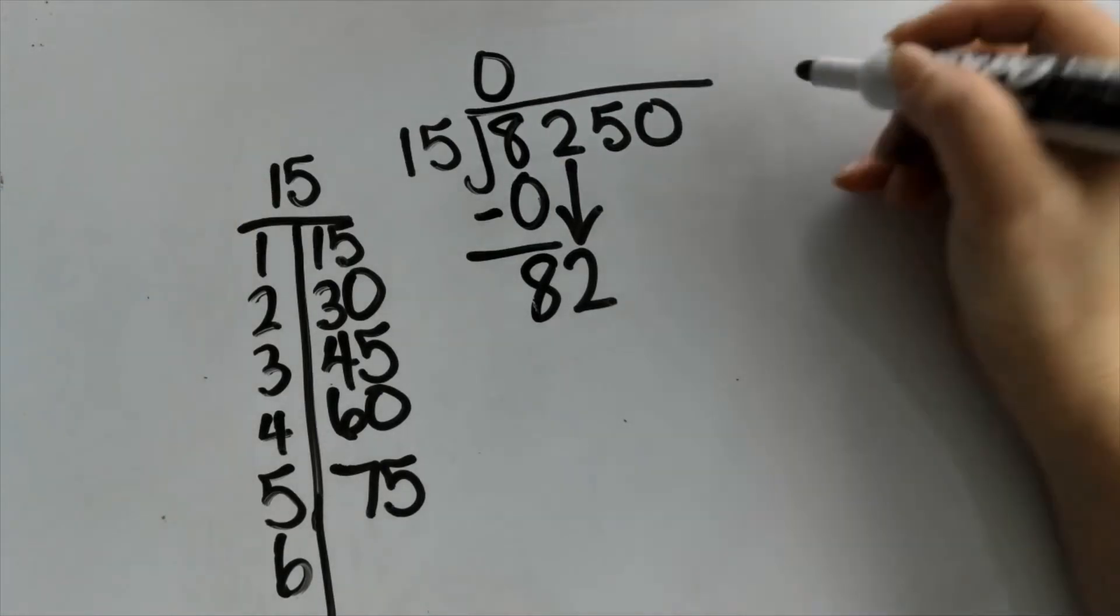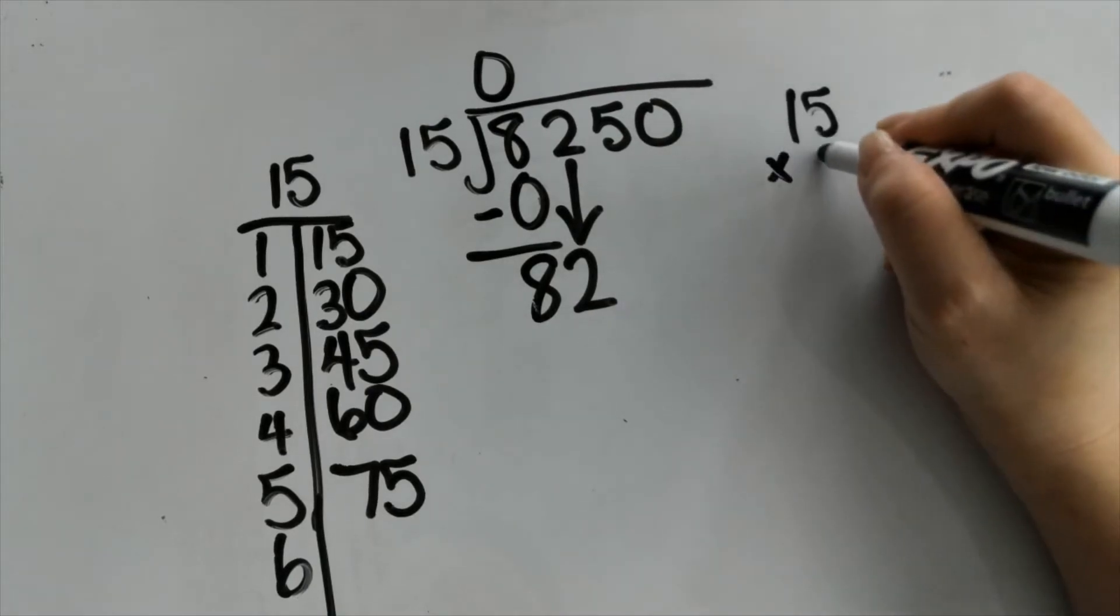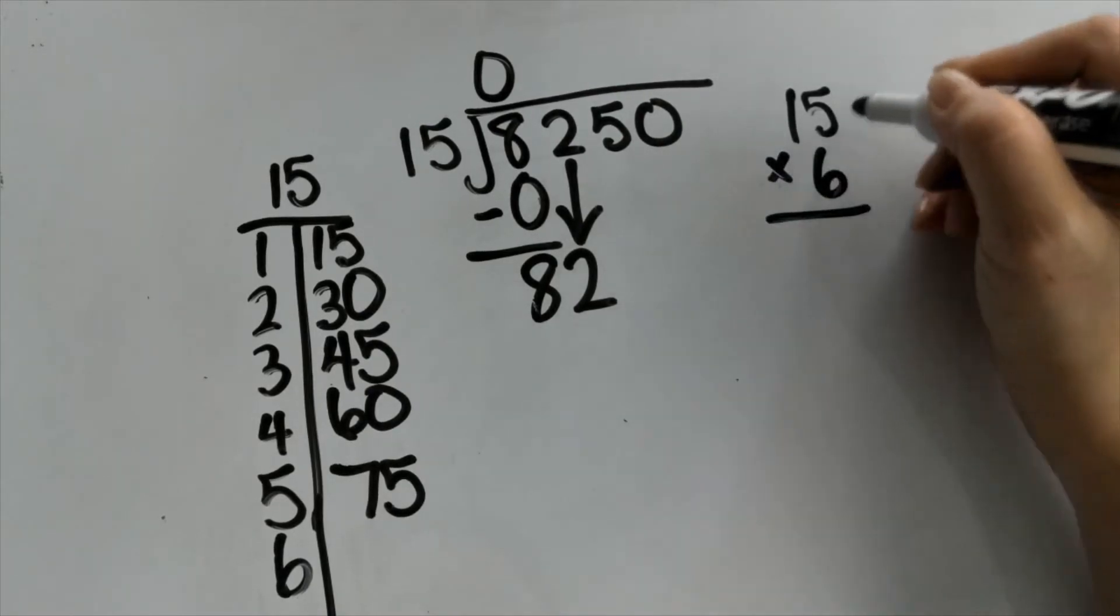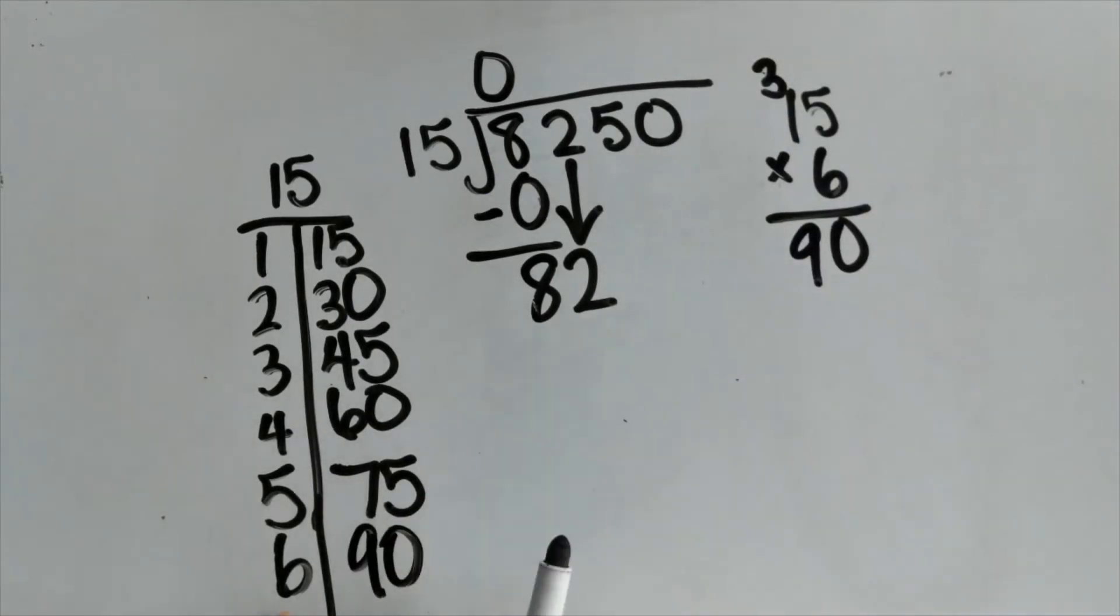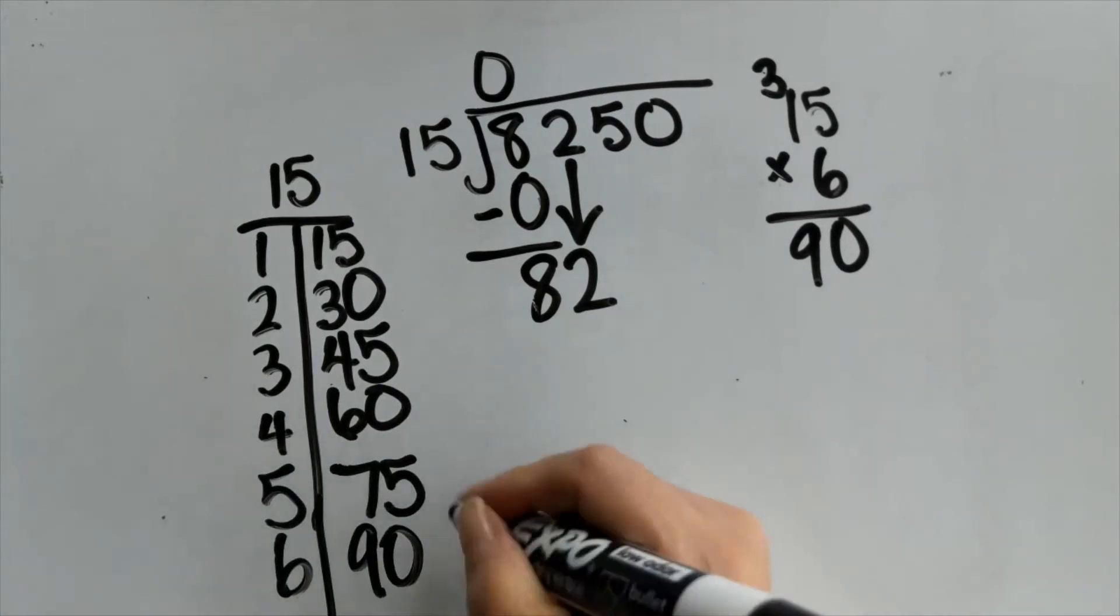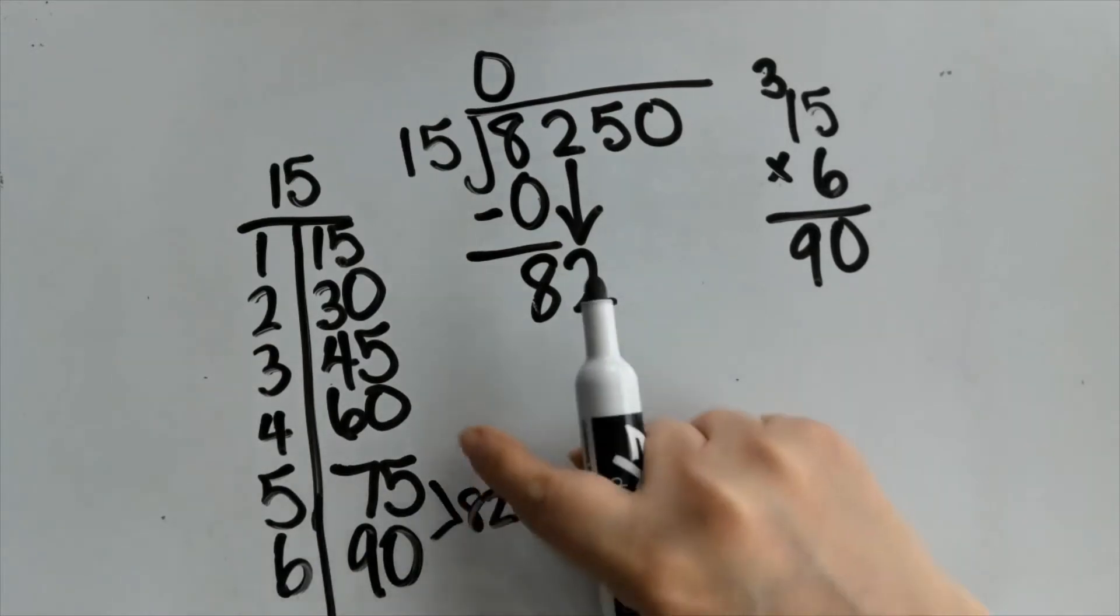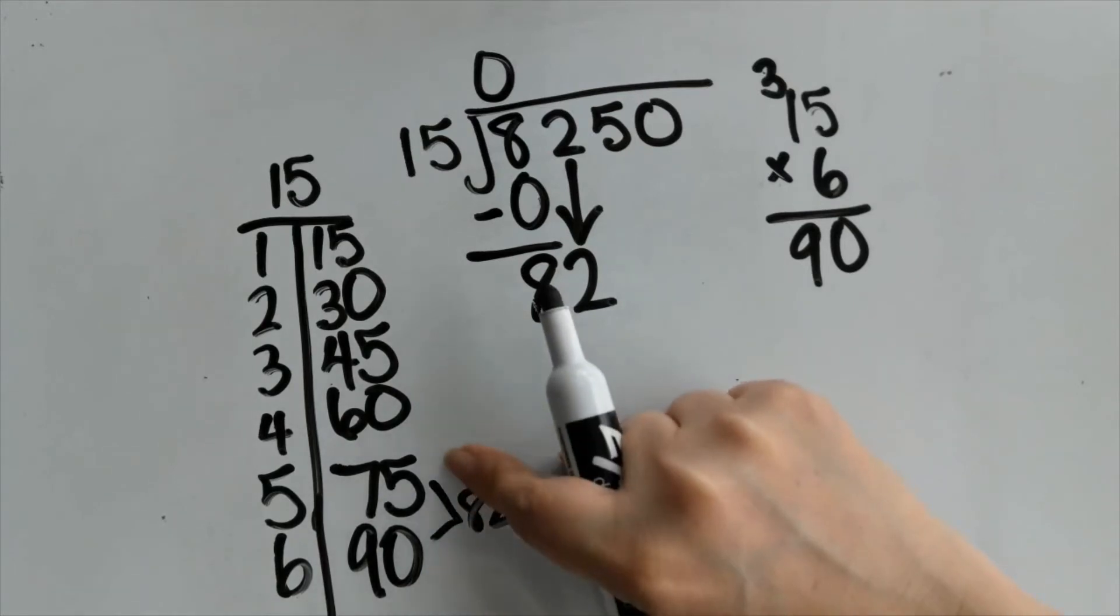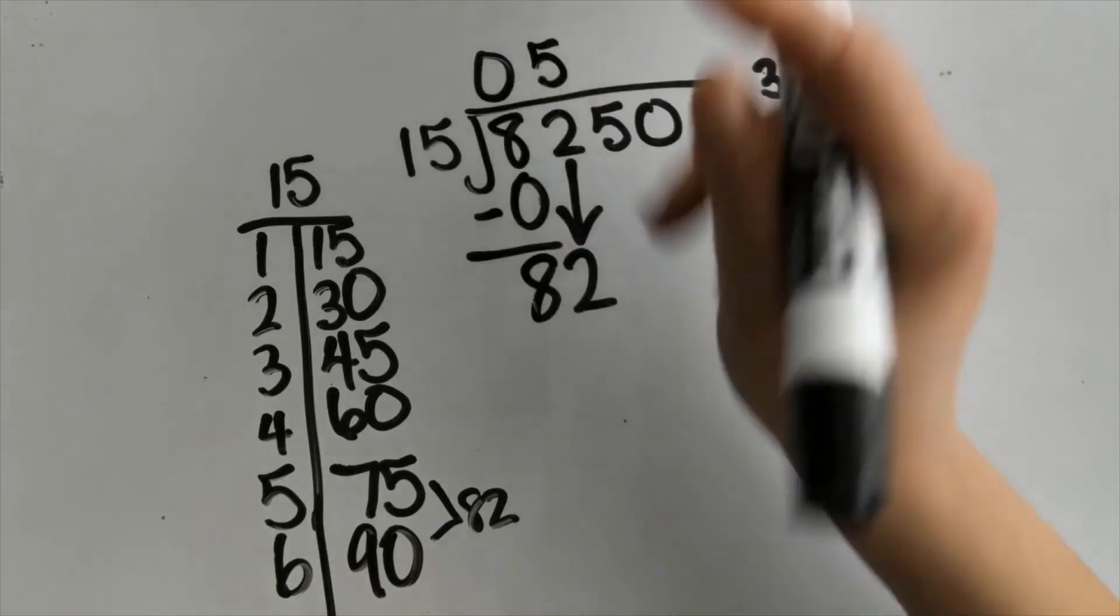So now we're going to do 15 times 6. This is what we have. So I know that when I make six groups I'm going to need 90, but I don't have 90. 82 is in between these two numbers, so I need to stop at this one right here. I cannot go over 82 but I can have less than 82, so I'm going to stop at 5.